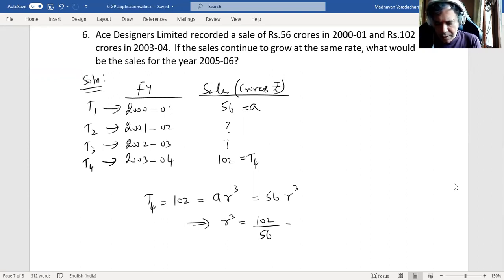102 divided by 56 we get 1.8214, which means r is the cubic root of 1.8214. That will be giving you 1.2211. We can stop with three digits: 1.221 is our r value.